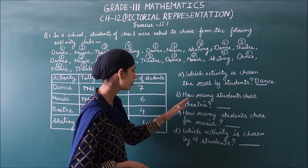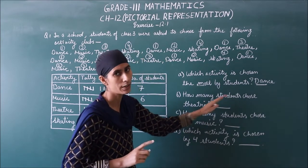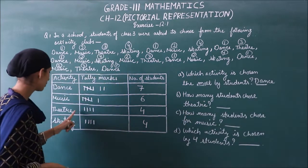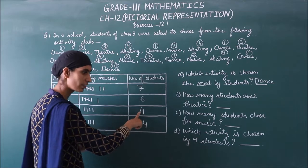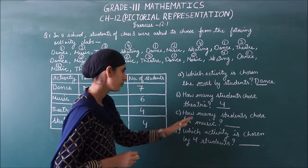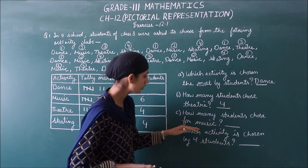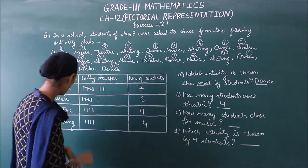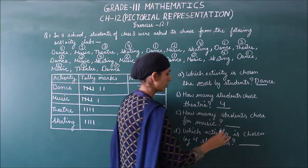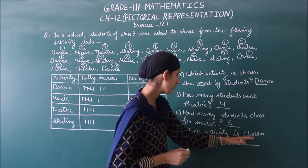Next question: how many students chose theater? We check theater in our tally chart — number of students in theater is 4, so the answer is 4. Next: how many students chose music? Checking music in the chart — number of students is 6, so the answer is 6.